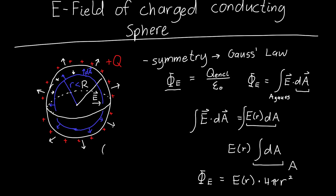Now we need to figure out the charge enclosed by our Gaussian surface. In a conductor, any charge placed inside will immediately repel itself — charge inside a conductor is free to move and ends up on the surface. So we're left with no charge inside, and all of the charge ends up on the surface. Because our Gaussian surface is inside the conducting sphere, it encloses no charge — the charge enclosed equals zero.